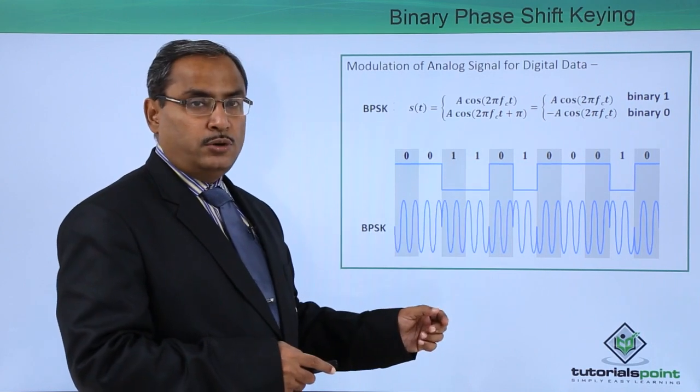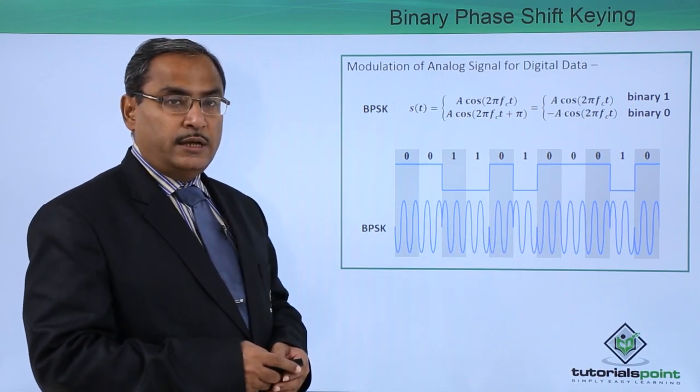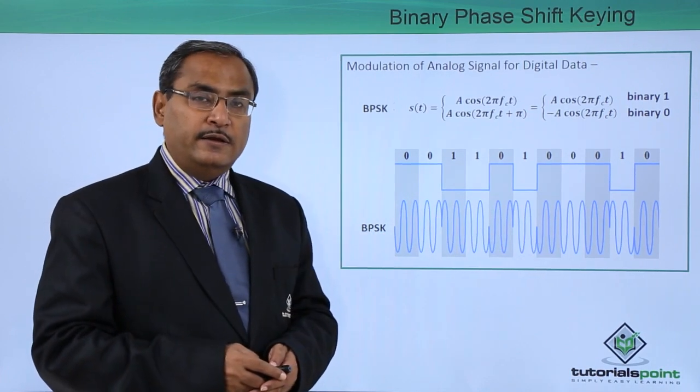It will become minus A cos 2π fct. So again it has become negative and the respective signal has got generated, and that is known as binary phase shifting.